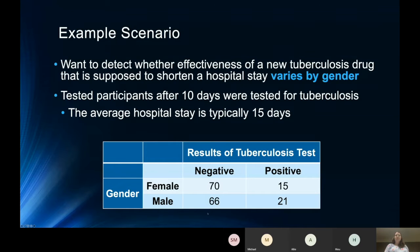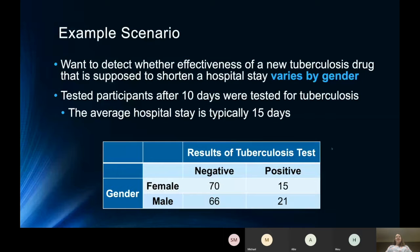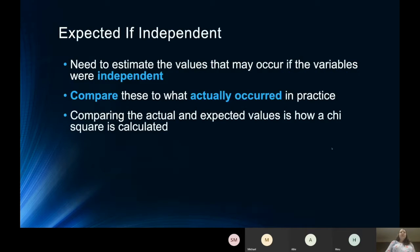What you're seeing here is a frequency table — the number of data points in each one of these groups. We're going to be comparing men and women and whether the test is more effective for women than it is for men or vice versa. We would have two groups: the results of the tuberculosis test — negative or positive — and the gender of the individual, female or male. That's what I mean by two categorical variables. For instance, 70 individuals would have tested negative and they were female; 66 individuals would have tested negative and they're male. And 21 individuals would have tested positive and they were male.